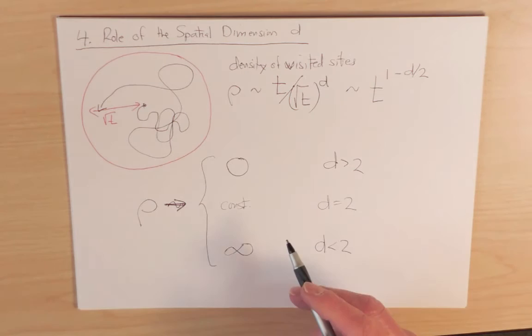This change in behavior between infinite density and 0 density is also what's known as a transition between transient and recurrence.